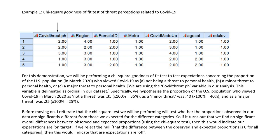What we're going to be hypothesizing in this example is that the proportion of the U.S. population who viewed COVID-19 in March of 2020 as not a threat was 0.35, as a minor threat was 0.40, and as a major threat was 0.25. I want to mention that these are just arbitrary proportions I've picked, not based on any substantive theory or research. In real applications, you would typically have some substantive basis for laying out these hypothesized or expected proportions.